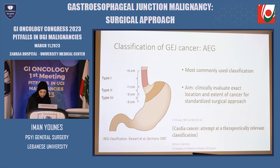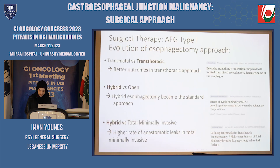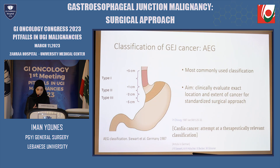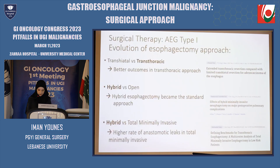As mentioned by Dr. Laies, the most commonly used classification is the AEG classification introduced by Seward et al. in Germany. AEG type 1 represents a tumor centered in projection on the distal esophagus within 1 to 5 centimeters orally of the anatomical cardia. AEG type 3 infiltrates the junction from below and is located within 2 to 5 centimeters aborally from the anatomical cardia. And AEG type 2, described as the true junction cancer, is where the epicenter of the tumor is located in projection to the anatomical cardia at plus 1 to minus 2 centimeters. This classification is the one most commonly used by surgeons when deciding on the surgical approach for gastroesophageal cancer.